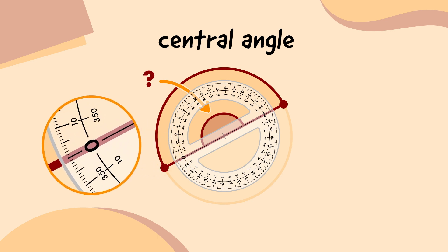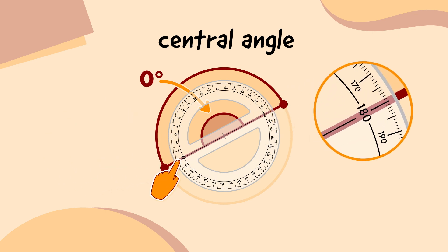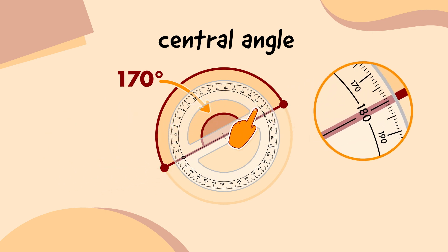You might notice that there's two sets of numbers — one that counts up clockwise, and one that counts up anti-clockwise. We only need the clockwise numbers, so let's ignore the other set. My measuring staff tells me that this central angle is 180 degrees.